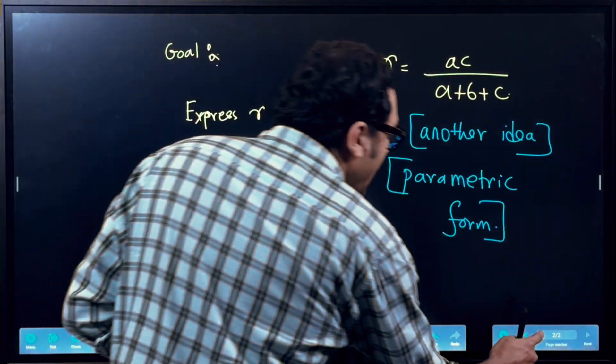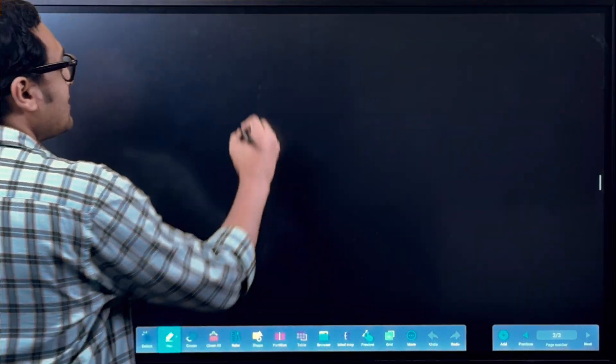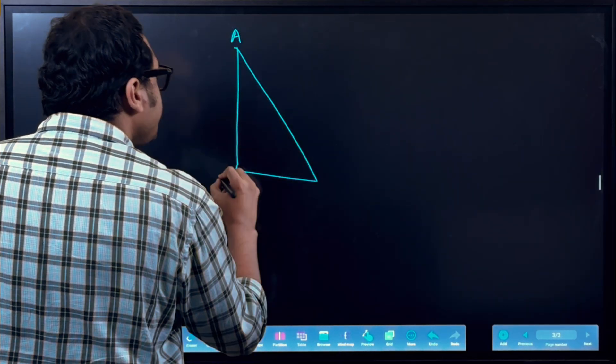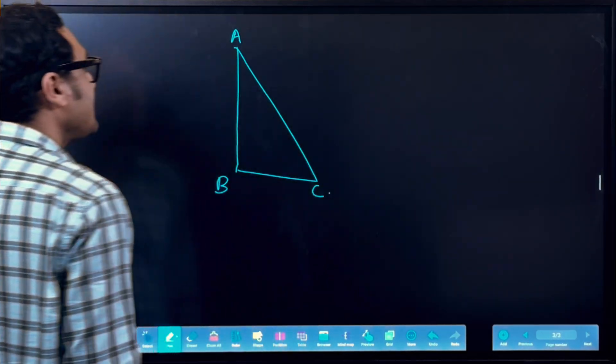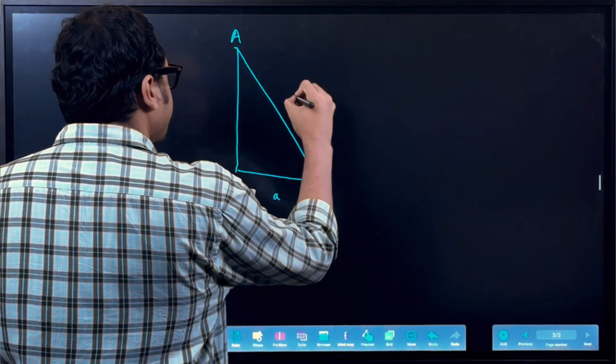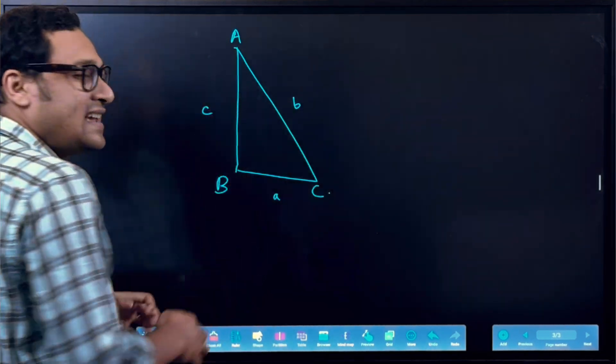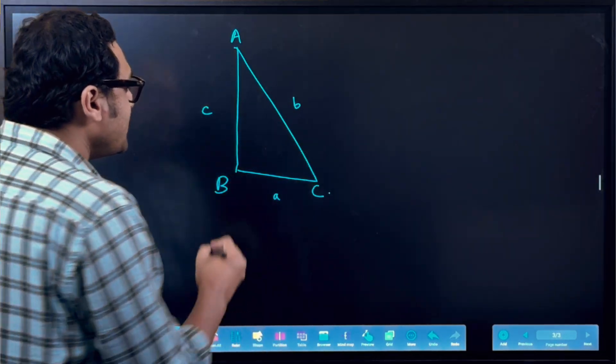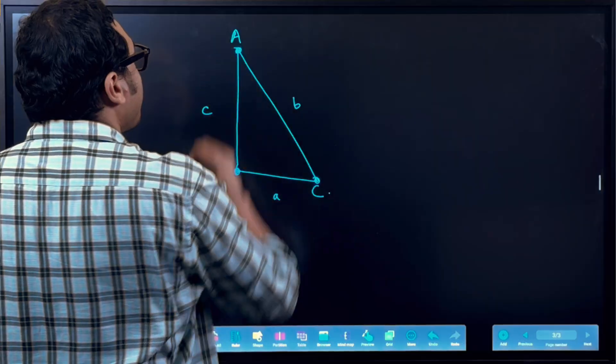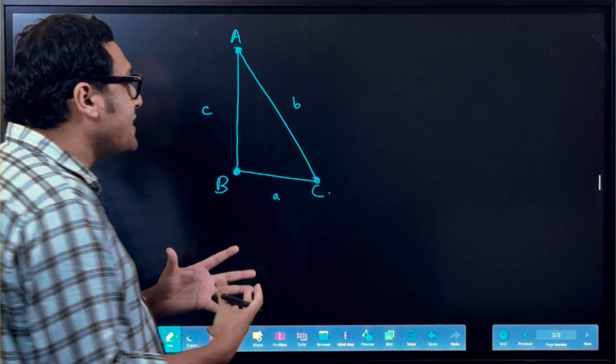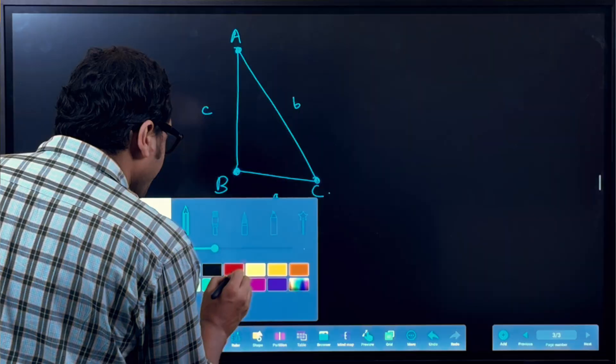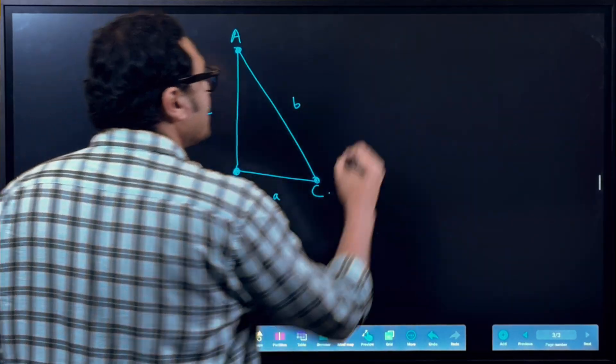Okay. So what is the parametric form? Basically, if you have a right triangle, suppose we have a right triangle A, B, C, then we know this side is small a, this side is small b, this side is small c. That's how the convention goes. That's how you denote the sides. And the parametric form is saying a very simple but beautiful fact.